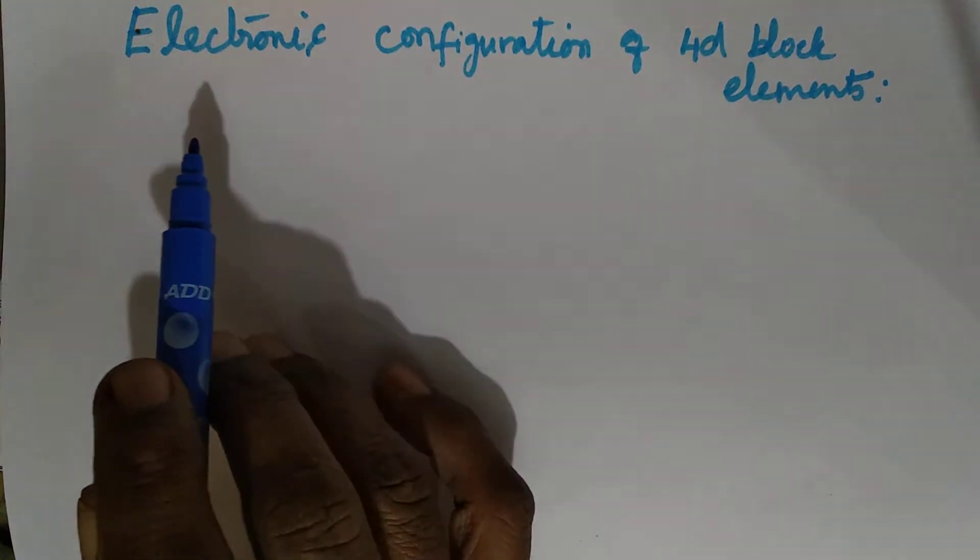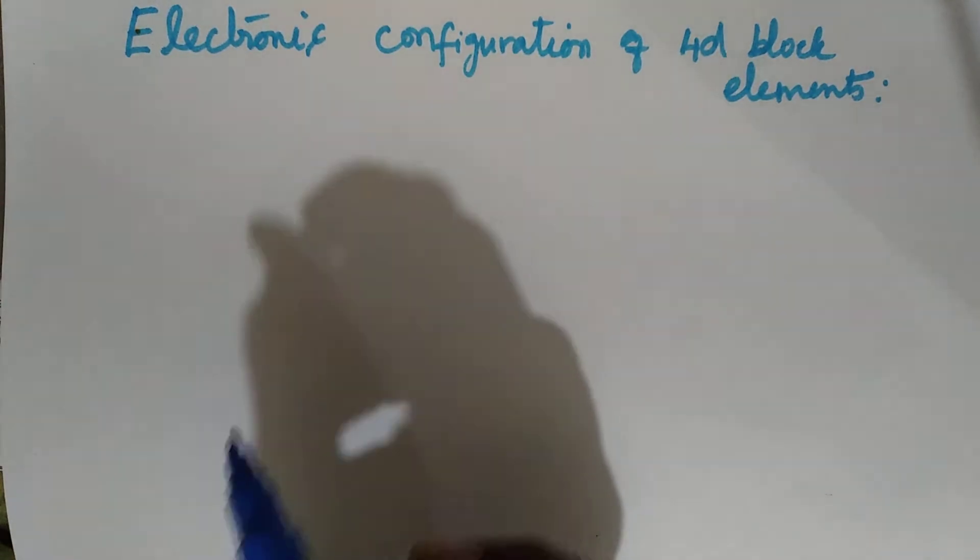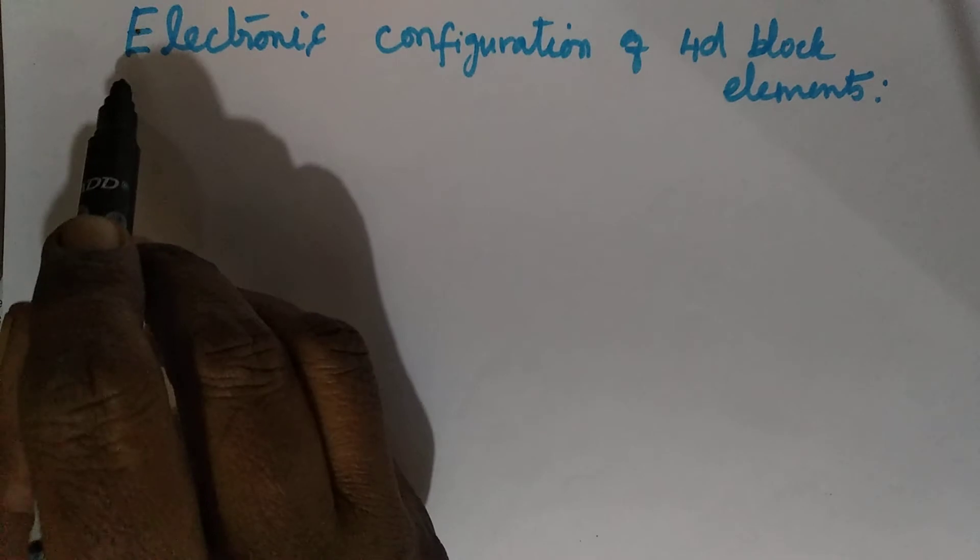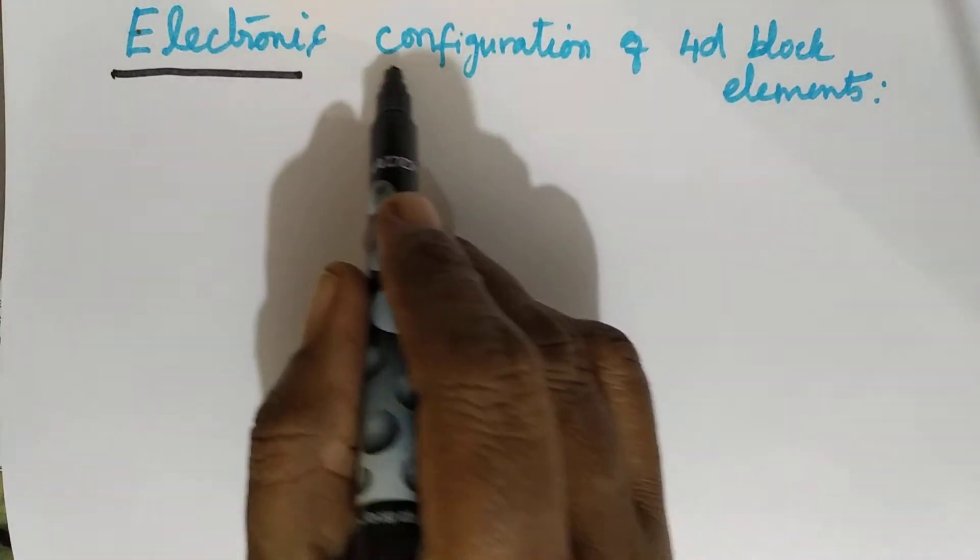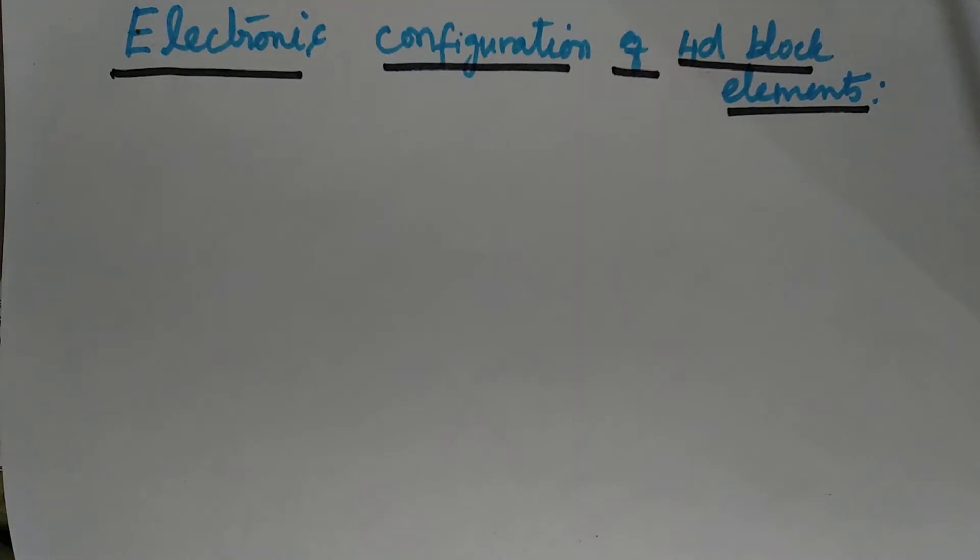Hi children, in the last video we have seen about the electronic configuration of 3D block elements. Now we will see about the electronic configuration of the 4D block elements in this video, and how that electronic configuration can be written easily.